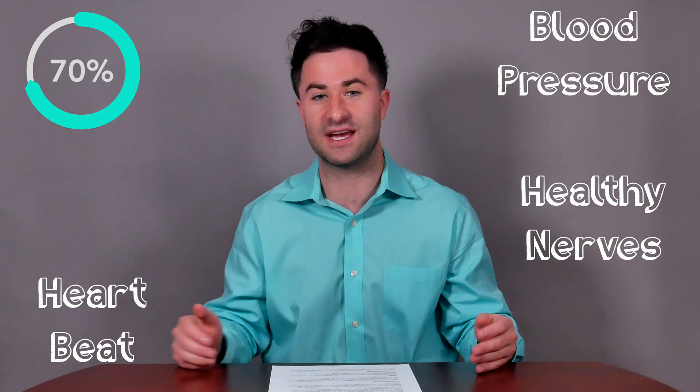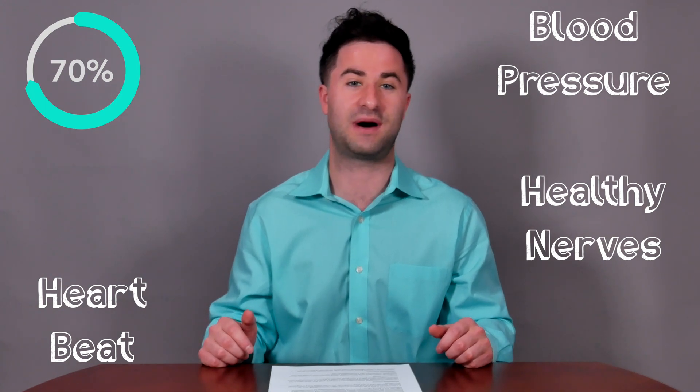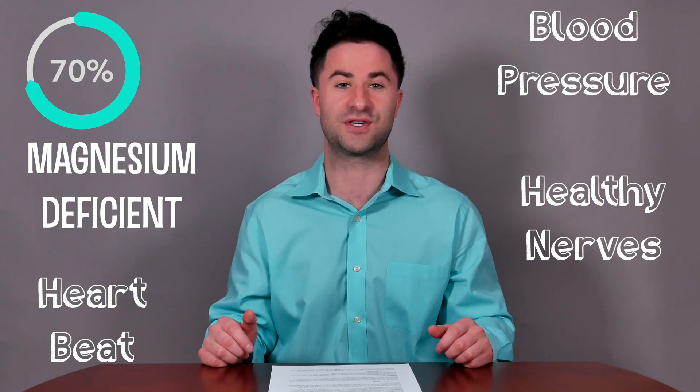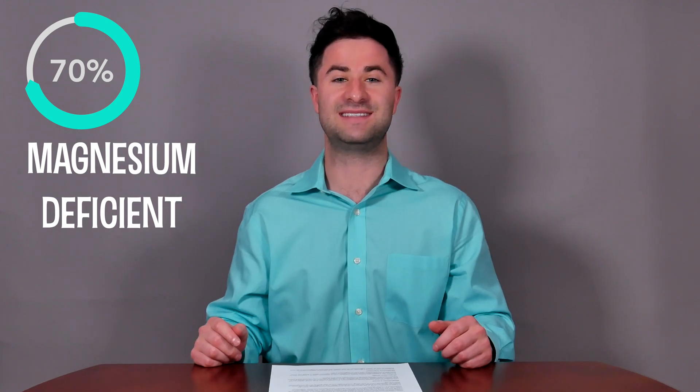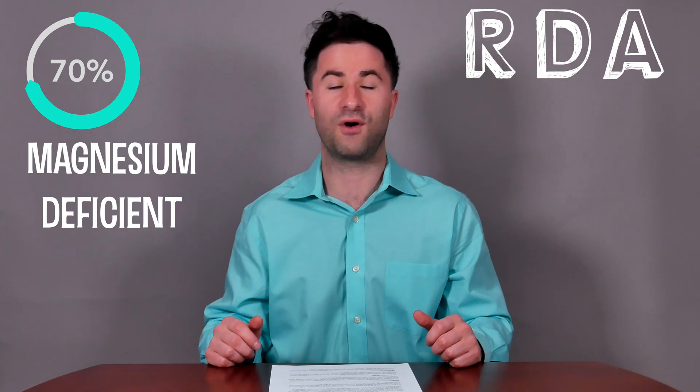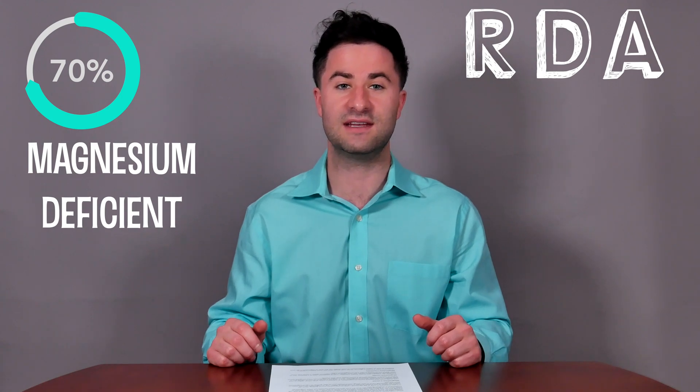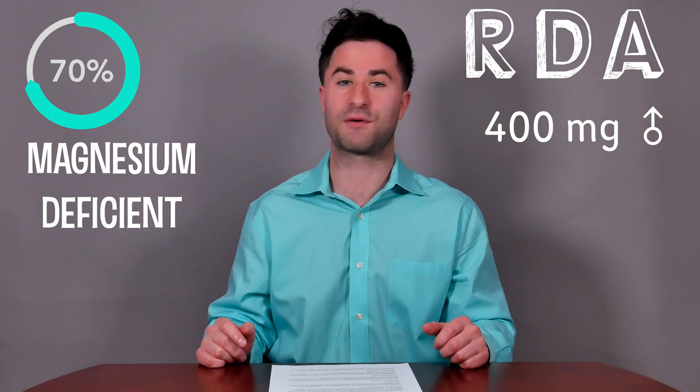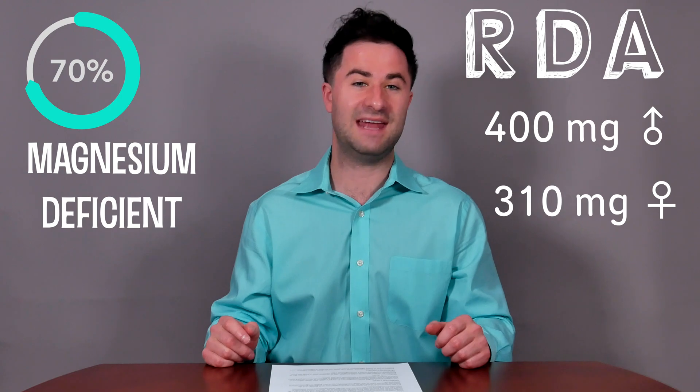Nearly 70% of the entire United States population is deficient in magnesium. The recommended dietary allowance, also known as RDA, for all adults over the age of 18 is about 400 milligrams for men and about 310 milligrams for women.